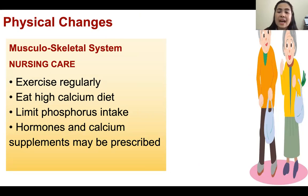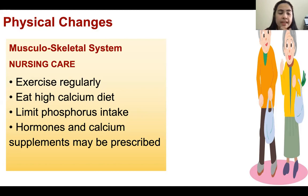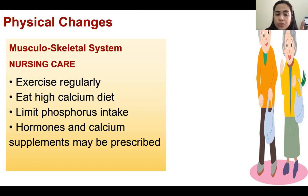For patients who have osteoporosis, encourage a high-calcium diet — like milk and cheese — to help enrich calcium in the body. Limit phosphorus intake. Hormones and calcium supplements may be prescribed.